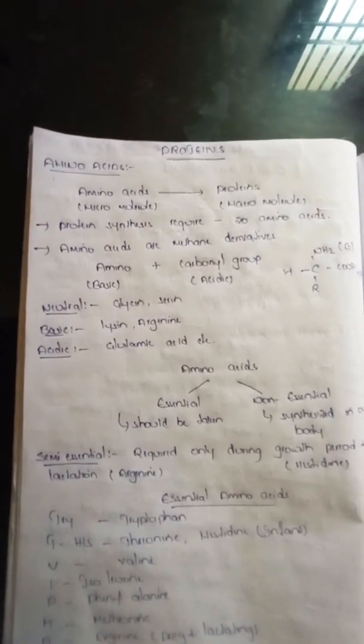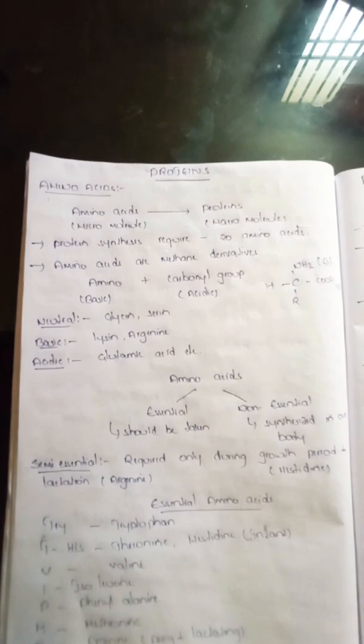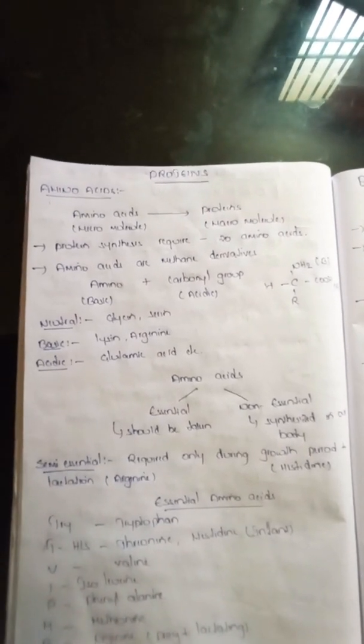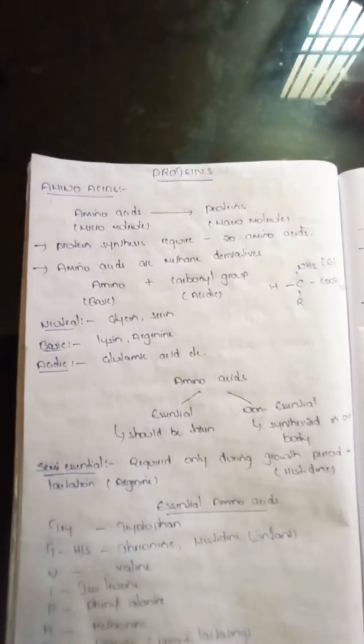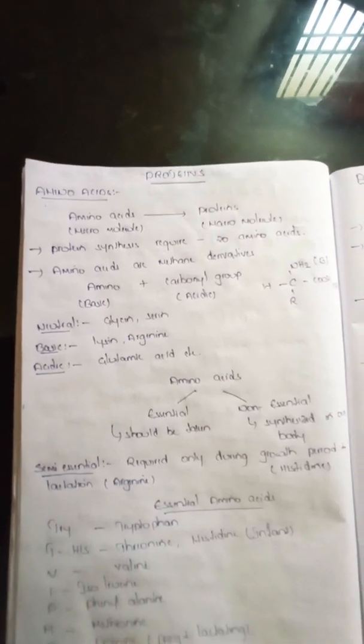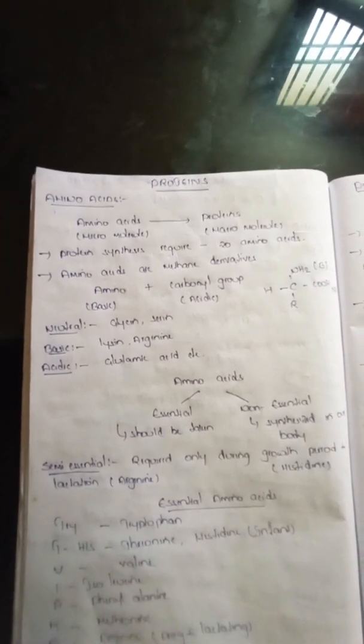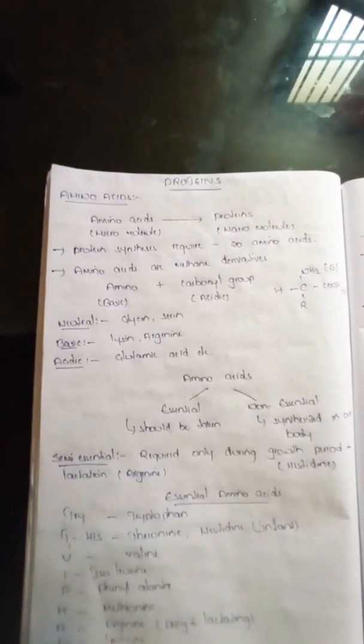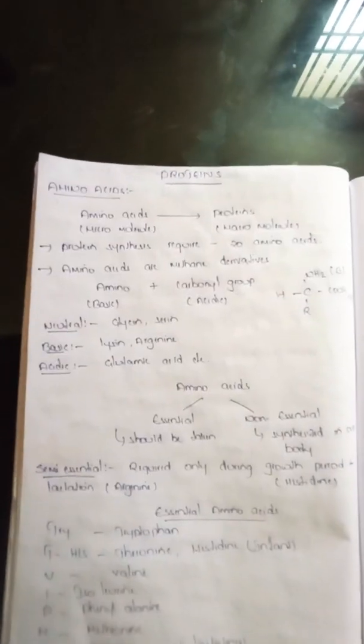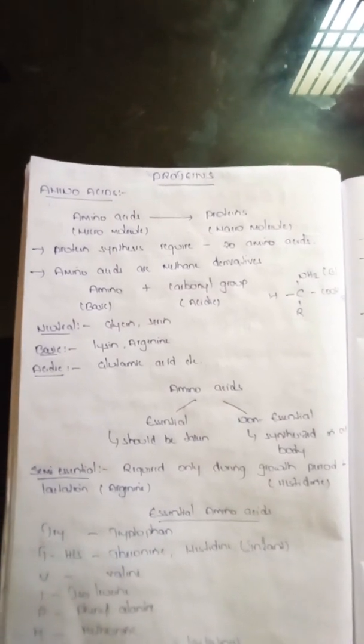Hello everyone. I am going to talk about proteins and amino acids. Amino acids together form a protein. The 5th unit covers amino acids and fatty acids. Amino acids are micromolecules and proteins are macromolecules. Amino acids together form proteins.